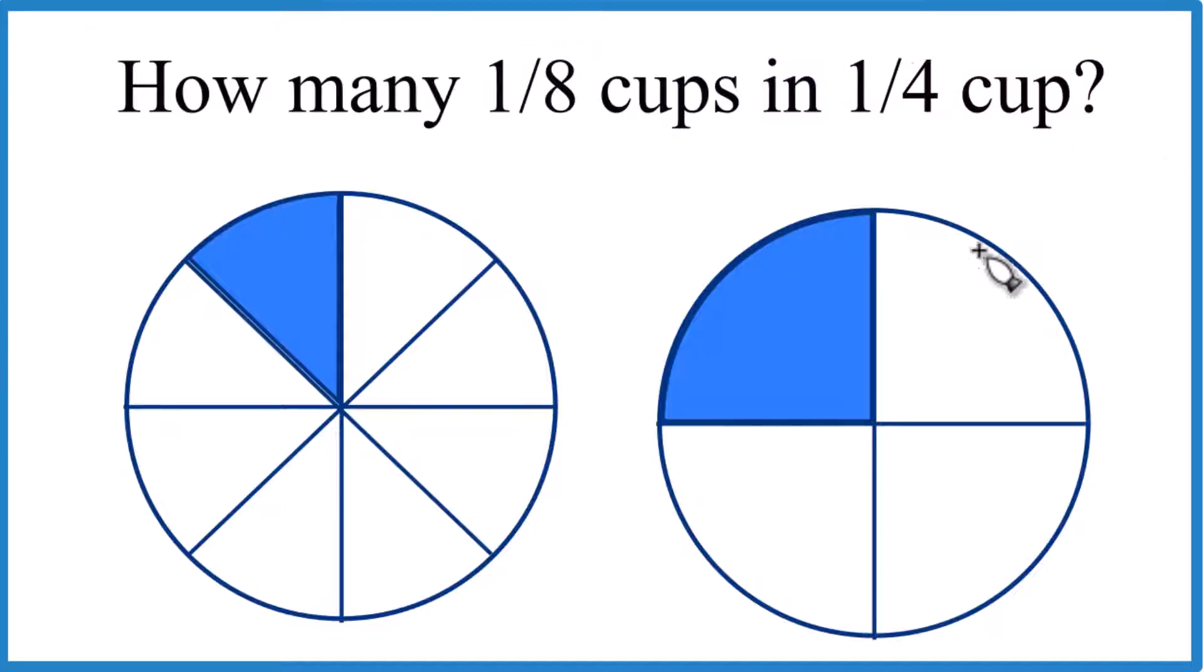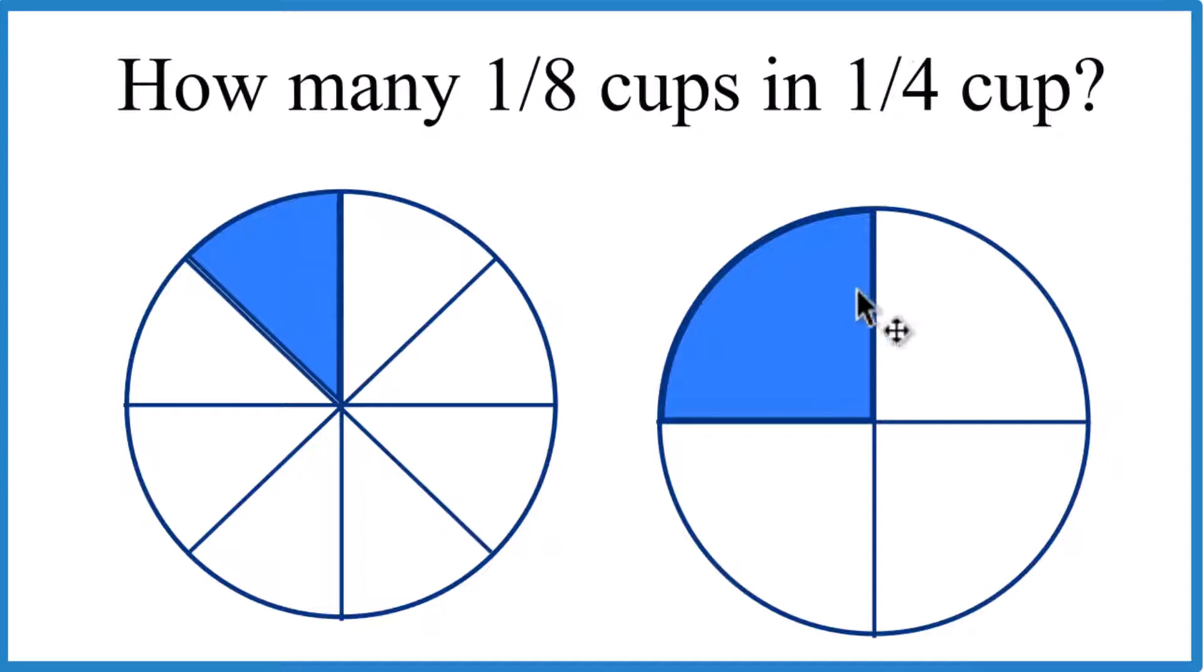So you can kind of think about it this way here. Here's our eighth of a cup and here's our fourth of a cup. So it looks like maybe two of them would go there into that fourth cup, but we can check this out mathematically.